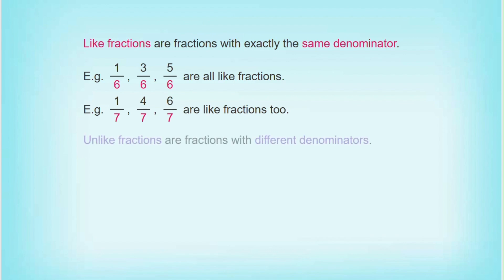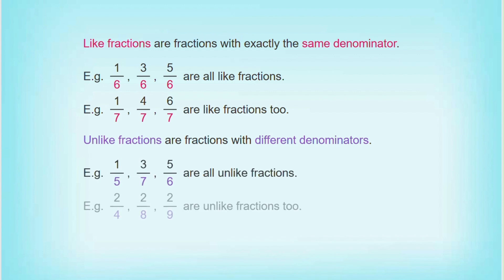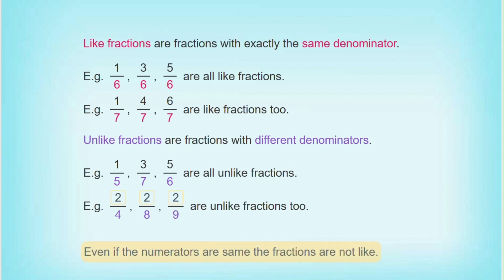Unlike fractions are fractions with different denominators. For example, one by five, three by seven, and five by six are all unlike fractions. Two by four, two by eight, and two by nine are unlike fractions too. Even if the numerators are the same, the fractions are not like fractions.